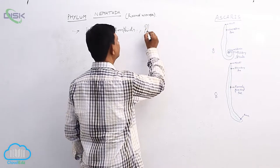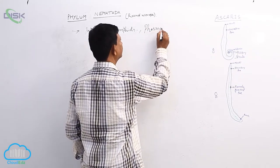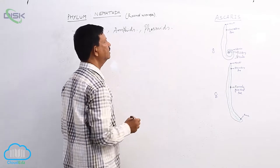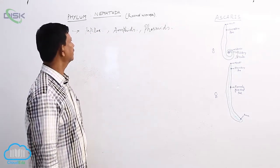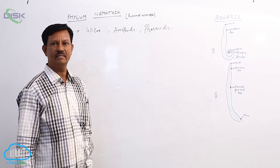Phasmids are also present in some animals. They are present at the posterior end of the body. Such type of sensory organs are well developed in the parasitic forms.